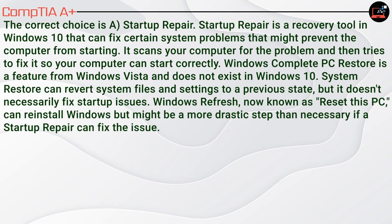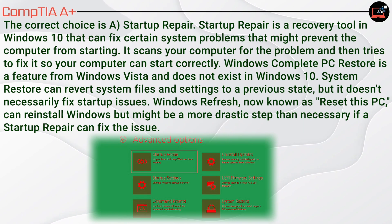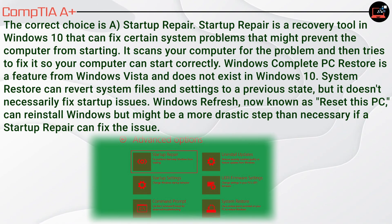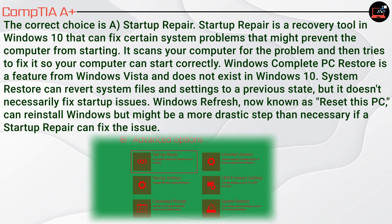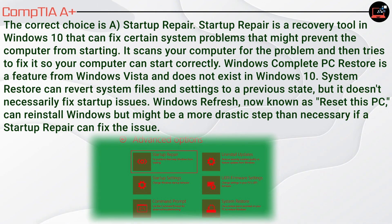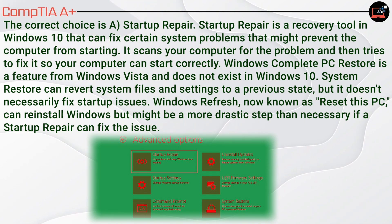The correct choice is A. Startup Repair. Startup Repair is a recovery tool in Windows 10 that can fix certain system problems that might prevent the computer from starting. It scans your computer for the problem and tries to fix it. Windows Complete PC Restore is a feature from Windows Vista and does not exist in Windows 10. System Restore can revert system files and settings to a previous state, but doesn't necessarily fix startup issues. Windows Refresh, now known as Reset This PC, can reinstall Windows but may be more drastic than necessary if Startup Repair can fix the issue.